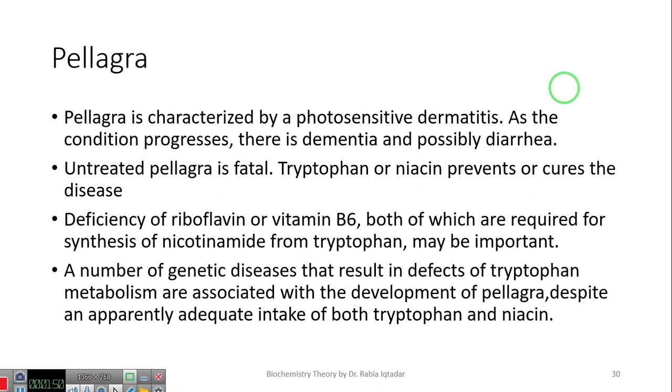Tryptophan or niacin prevents or cures the disease. Because niacin is a vitamin which can be synthesized in the body with the help of tryptophan. So if we increase tryptophan or niacin, it can prevent or cure the disease. Deficiency of riboflavin and vitamin B6, both of which are required for synthesis of nicotinamide from tryptophan may also be important. That is why we give the patient vitamin B complex so that the associated vitamin deficiency can also be cured. A number of genetic diseases that result in defects of tryptophan metabolism are associated with the development of pellagra, despite an apparently adequate intake of both tryptophan and niacin.